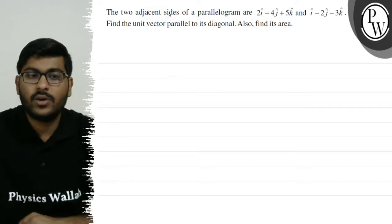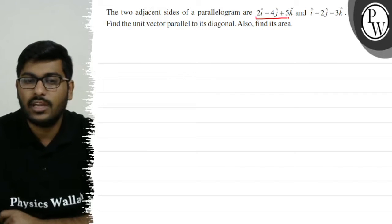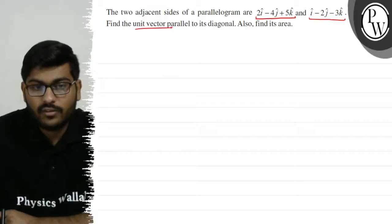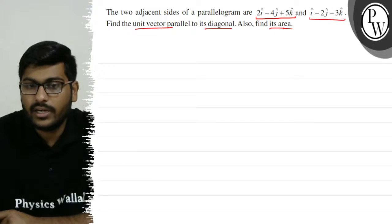Let's see this question. The question is that the two adjacent sides of a parallelogram are 2i-cap minus 4j-cap plus 5k-cap and i-cap minus 2j-cap minus 3k-cap. Find the unit vector parallel to its diagonal and also find its area.